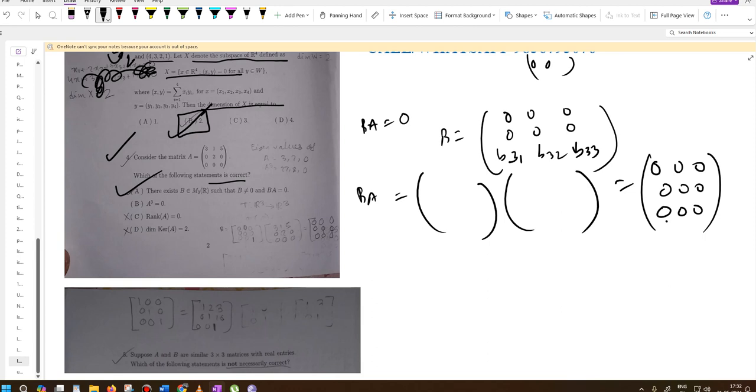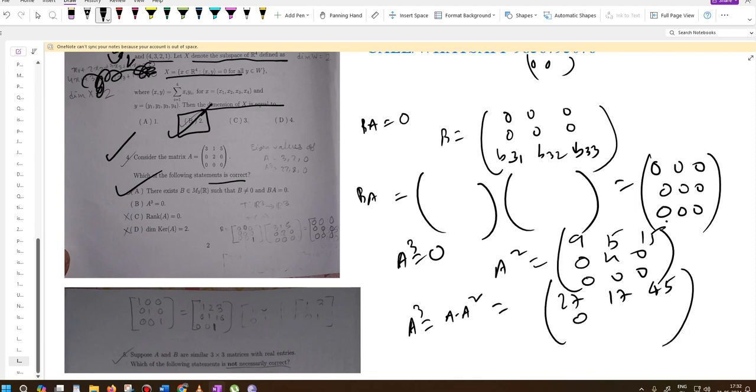Statement B says A cube equals zero. First, we compute A square. A square becomes the matrix with entries 9, 5, 15, 0, 4, 0, and zeros. Now we compute A cube as A times A square. This gives us 27, 17, 45, 0, 8, 0, and zeros.